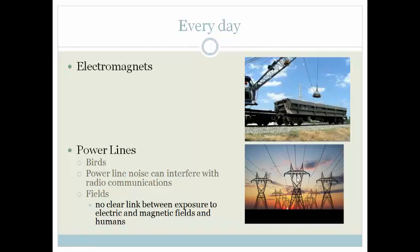The first problem with power lines is that they actually get in the way of birds. Birds not only knock into the power lines, but birds use the magnetic field of the earth to guide them — they can migrate using the magnetic field. As they go past these high-powered electric lines, the magnetic field around them actually interferes with their sense of the earth's magnetic field, and they end up either crashing into the lines and dying or getting electrocuted. Power line noise can also interfere with radio communications — not noise we can hear, but a background electromagnetic field noise.